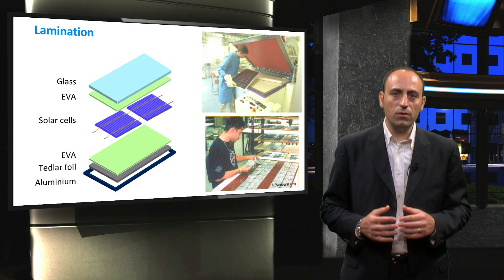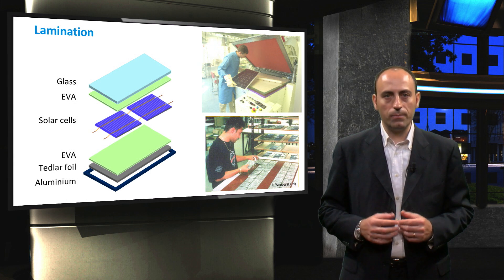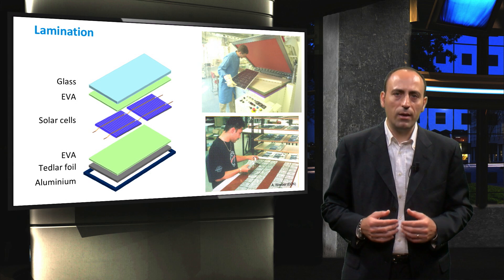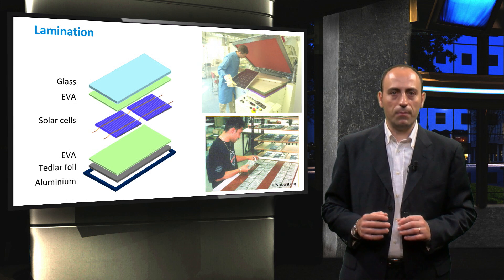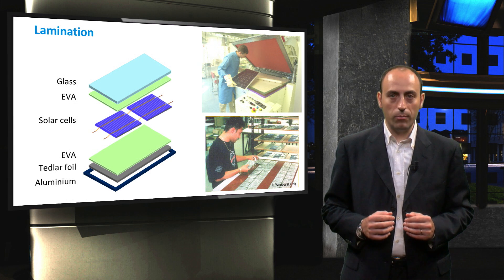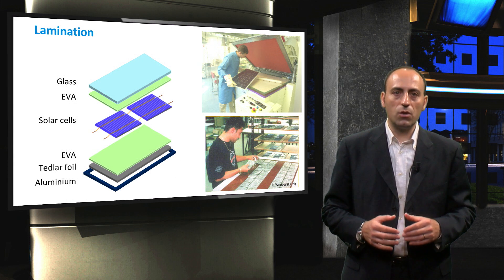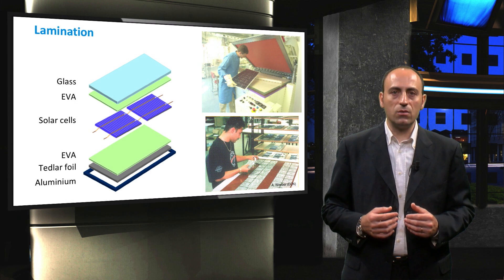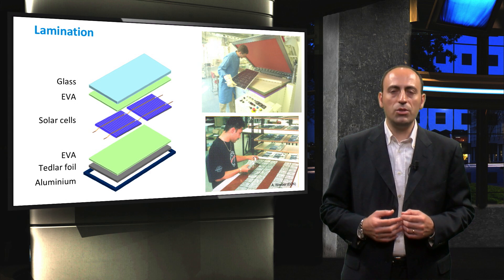As solar cells are interconnected, the following step in module production is the lamination, which we will briefly explain using EVA as an example. These are pictures taken in an R&D lab a number of years ago. Nowadays the production lines are fully automated, but the principle remains the same. In general, there is a back plate where solar cells are mechanically placed. Then the interconnection strips are soldered from one cell to the next. The whole stack consisting of front glass and encapsulant, interconnected solar cells, and back layer are brought together into the laminator, which is heated above the melting point of EVA, around 120 degrees centigrade. This process is performed in vacuum in order to ensure that air, moisture, and other gases are removed from within the module stack.